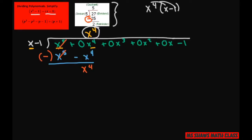Now bring down your next term, which is plus 0x cubed. What times x gives me x to the fourth? We're trying to get rid of the first term, so that's going to be x cubed. Then you multiply — that gives you x to the fourth minus x cubed.